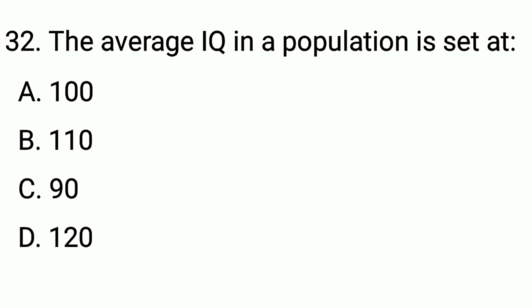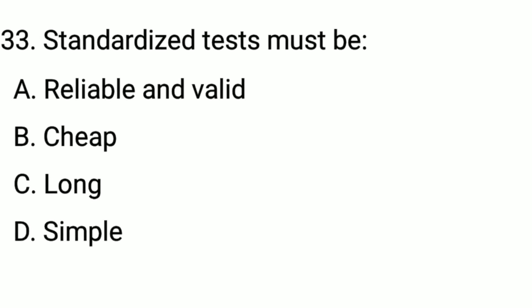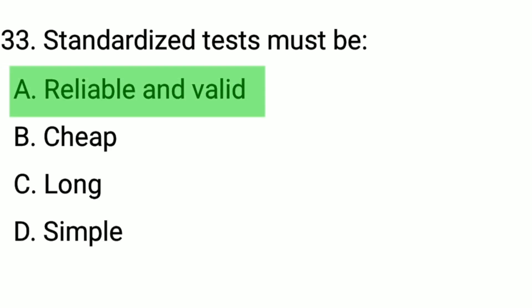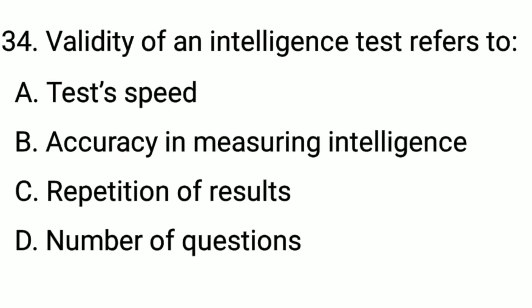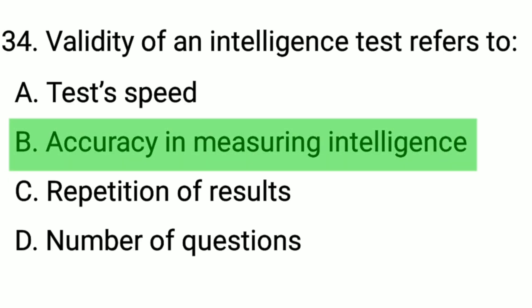Q32. The average IQ score is... The correct option is option A: 100. Q33-Q34. The validity of a test refers to... The correct option is option B: accuracy in measuring intelligence.